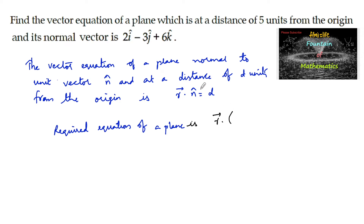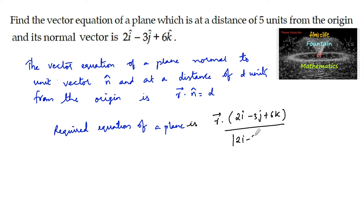The normal vector is given as 2i - 3j + 6k, and its unit vector is that divided by the modulus of 2i - 3j + 6k. The distance d is equal to 5 units from the origin.